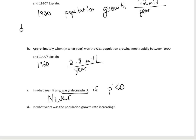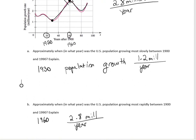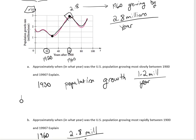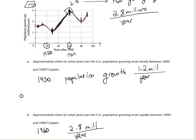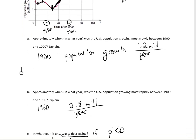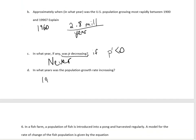When was the population growth rate increasing? We look for intervals where the derivative graph is increasing. That appears to be from 1930 to 1960, and from 1980 to 1990.